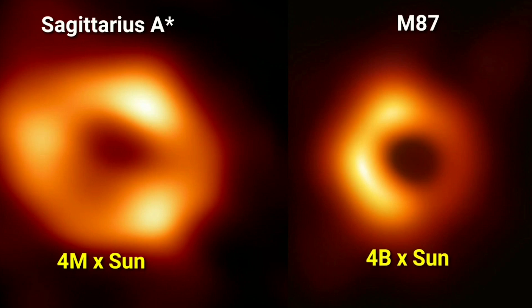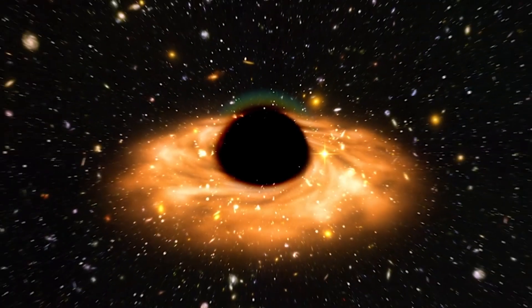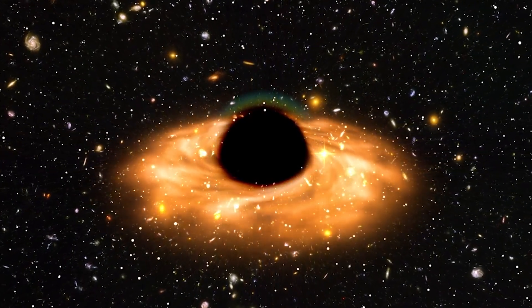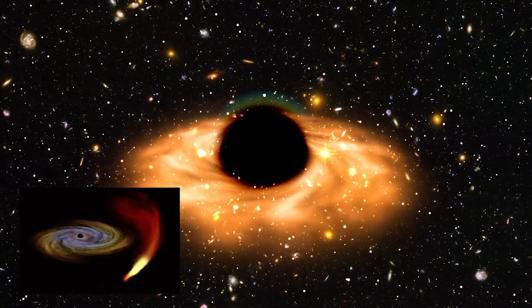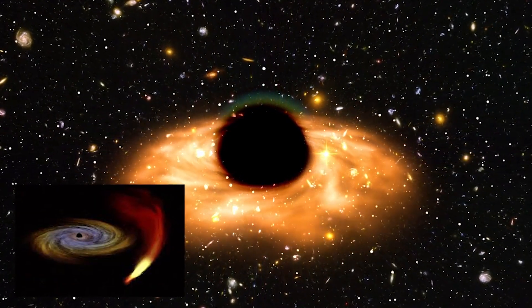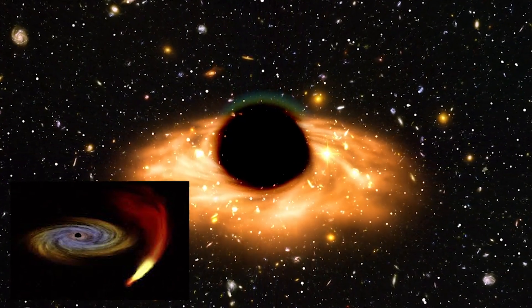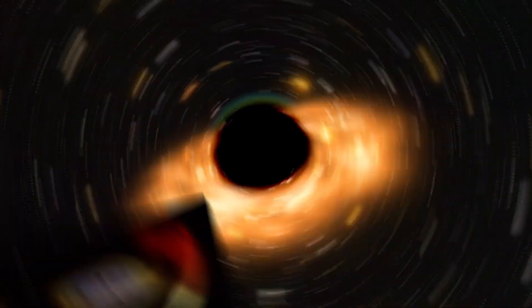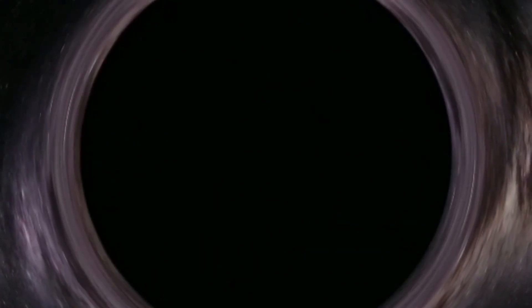Some researchers think the flare could be a delayed reaction. About a few years ago, a gas cloud named G2 passed dangerously close to Sagittarius A-star. At the time, astronomers expected it to be torn apart and eaten, but nothing major happened, at least not right away. Now, years later, it's possible that the black hole is finally digesting what's left of that cloud. In space, everything moves slowly, and reactions can take years, even centuries, to unfold.